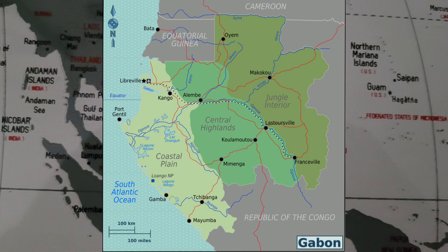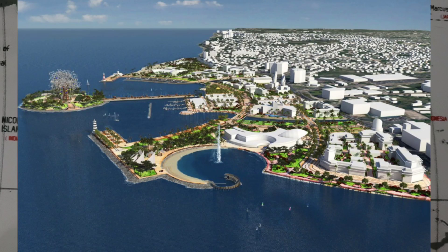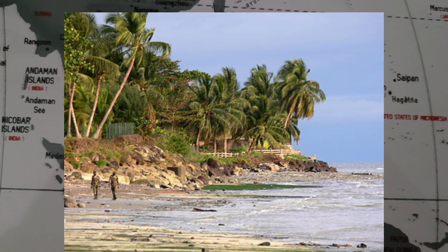Gabon is a country on the west coast of Central Africa and located on the equator. It has an area of nearly 270,000 square kilometers or 100,000 square miles, and its population is estimated at 2.3 million people. Gabon is a tropical country with a diverse range of ecosystems, including rainforests, savannas, and mangroves.